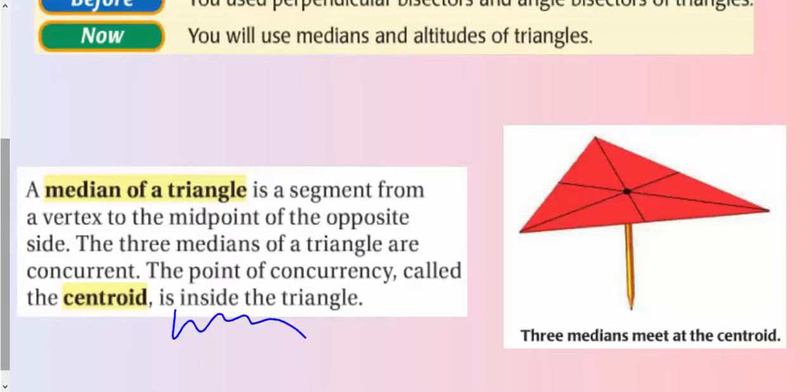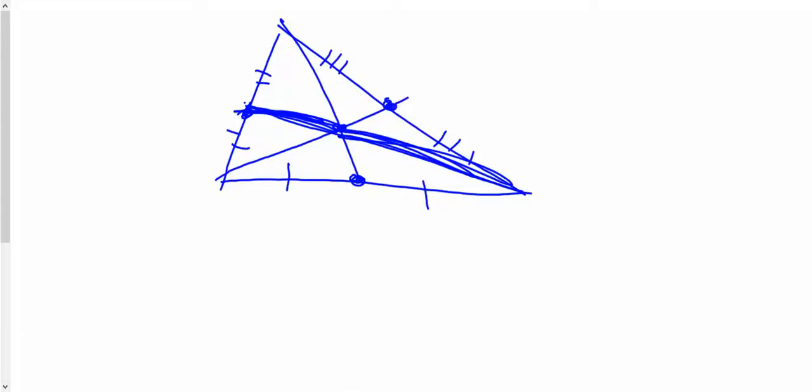And this is the center of gravity. You can balance, if you cut out a triangle and find that point there, you can balance that on the tip of an eraser of a pencil or something. And we're going to actually do that in class when we do our constructions. We're going to construct the centroid, and then we're going to cut it out and see that actually is the center of gravity.